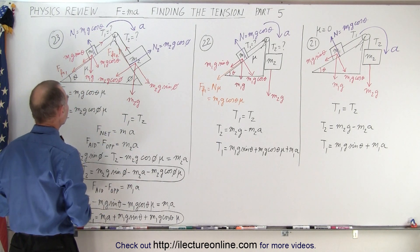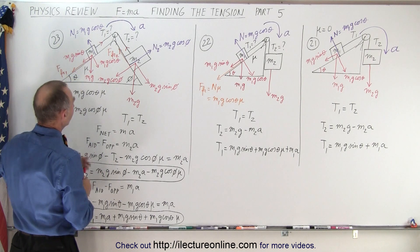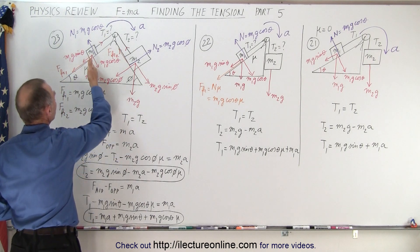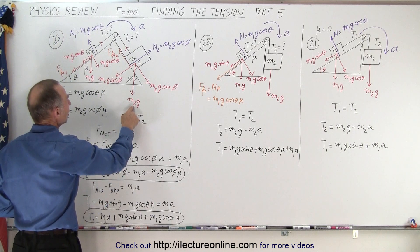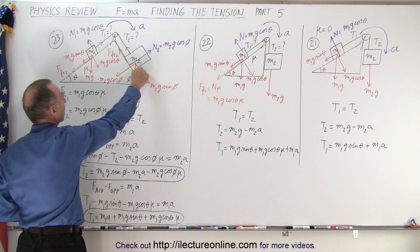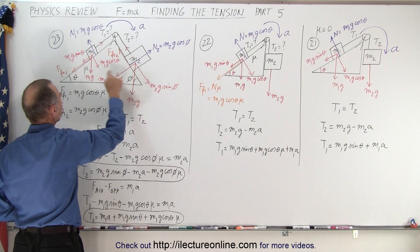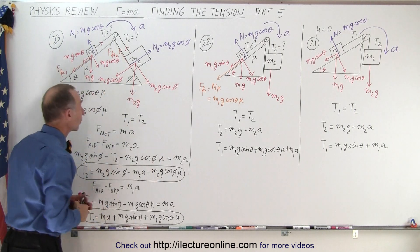So first we draw M1G and the two components perpendicular and parallel to the incline. M2G, the two components perpendicular and parallel to the incline. Notice that the two angles are different. They're not the same angle. They don't have to be the same.